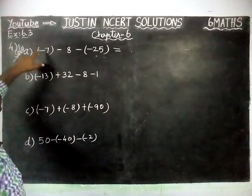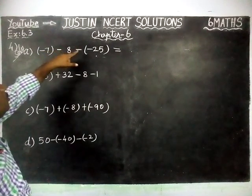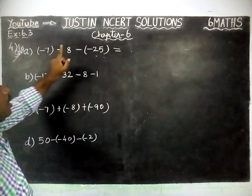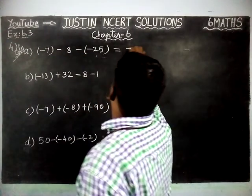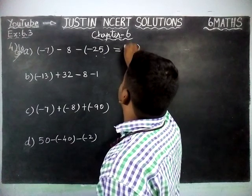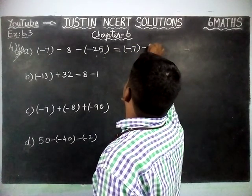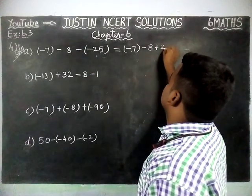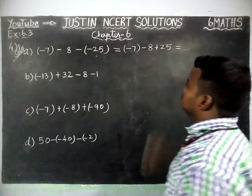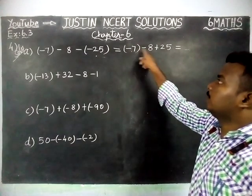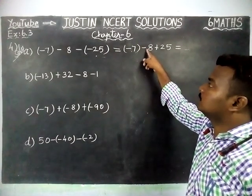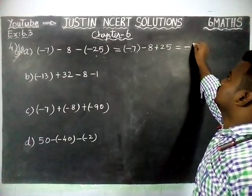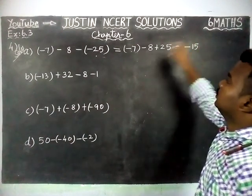Part A: minus 7 minus 8 minus into minus 25. Here we have 2 negative numbers and 1 positive number. So first, minus 7 minus 8 — minus of minus is equal to plus 25. These two are minus, and this minus is common for 8 also. Both are the same sign, so minus 8 plus 7: both are minus, so minus 15.